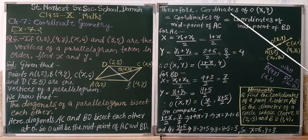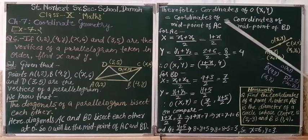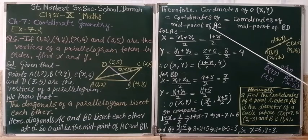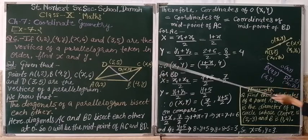So O will be the midpoint of AC and BD. Therefore, coordinates of O equals coordinates of midpoint of AC equals coordinates of midpoint of BD, because O is the midpoint of AC as well as BD.